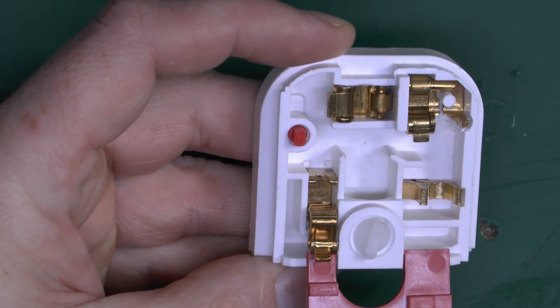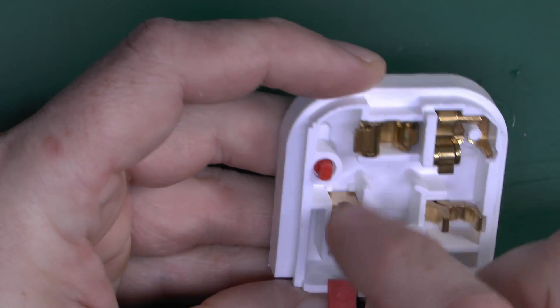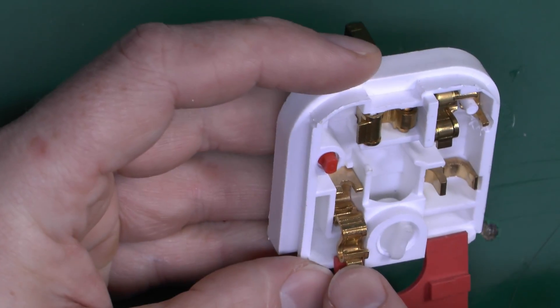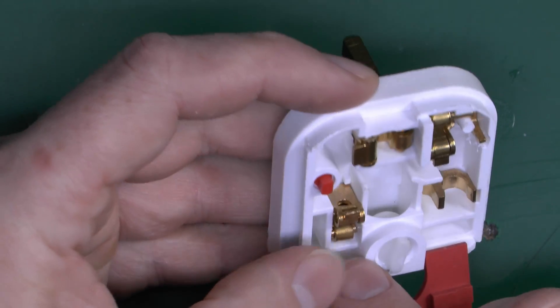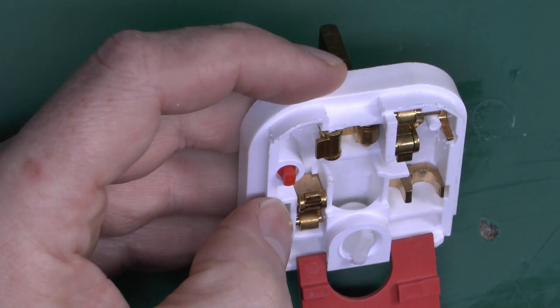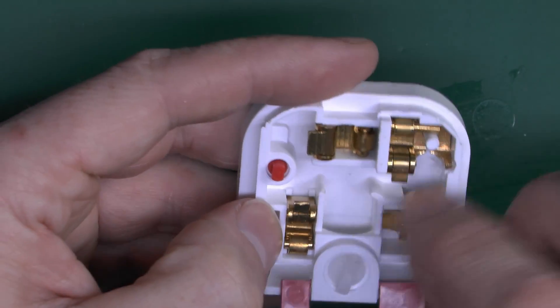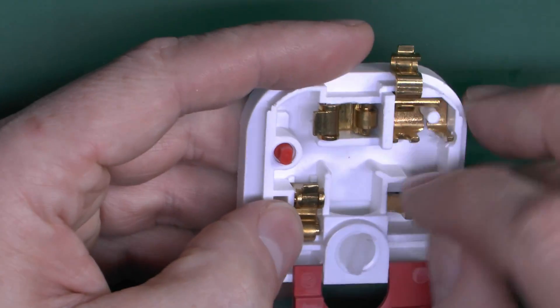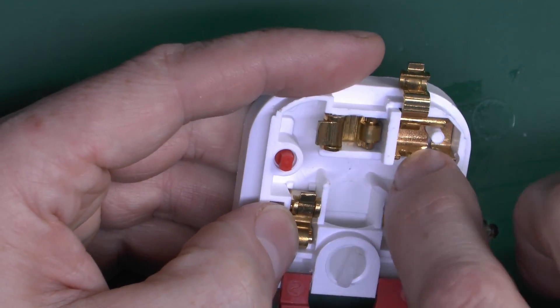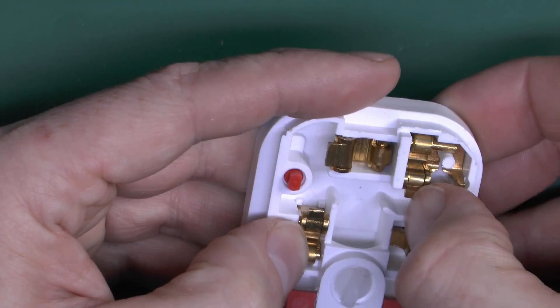So again here we've got the neutral connection there, and again that just wire goes through a little tab there, and then that just presses down, snaps in over the top there, and then the live wire, or the line as it's now called, goes up here, and again same deal, just goes in there, and that clicks down.